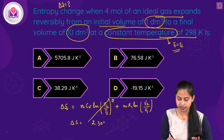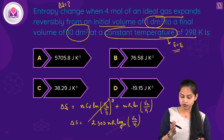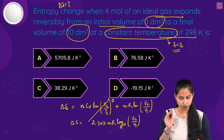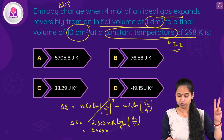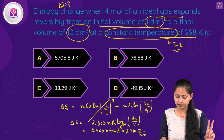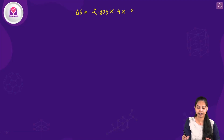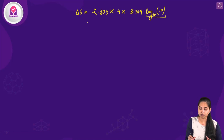Since it is an isothermal process, T1 = T2, so the nCv·ln(T2/T1) term becomes zero. Therefore ΔS = 2.303 × n × R × log₁₀(V2/V1) = 2.303 × 4 × 8.314 J·K⁻¹·mol⁻¹ × log₁₀(10/1).